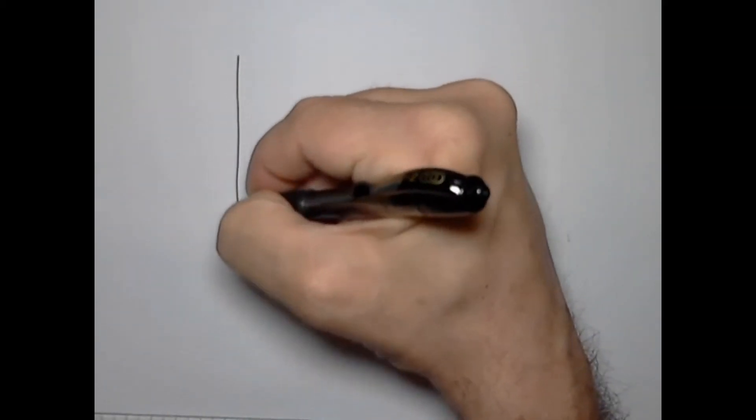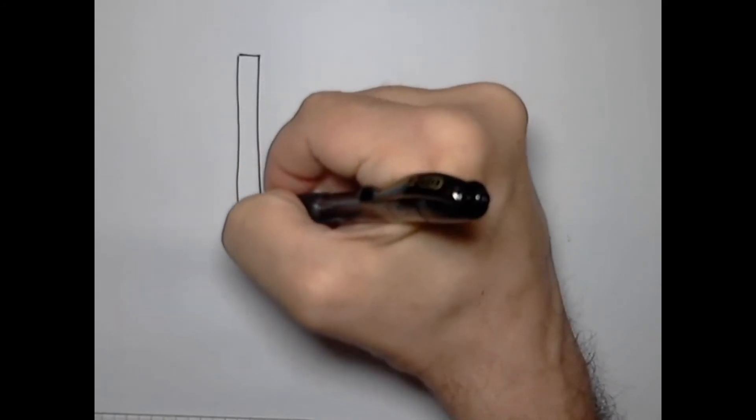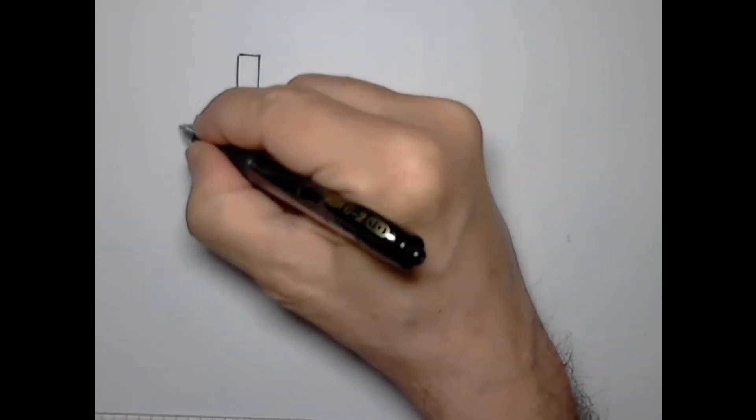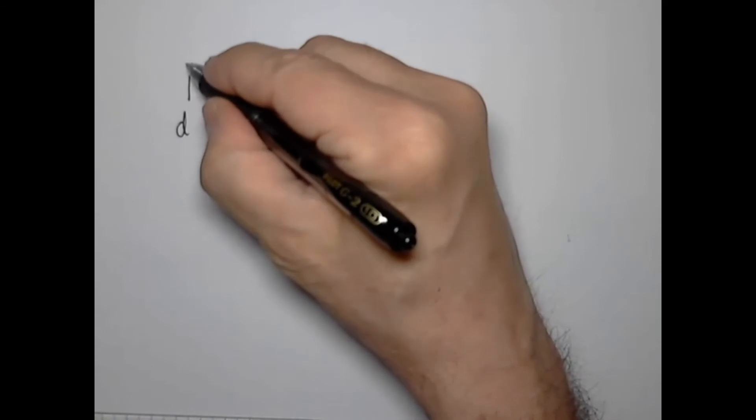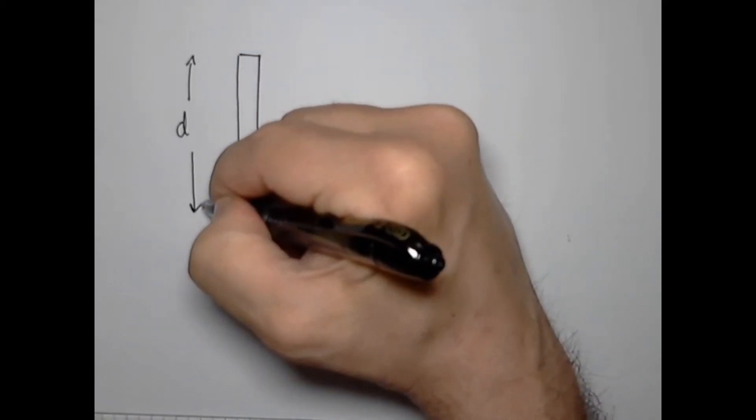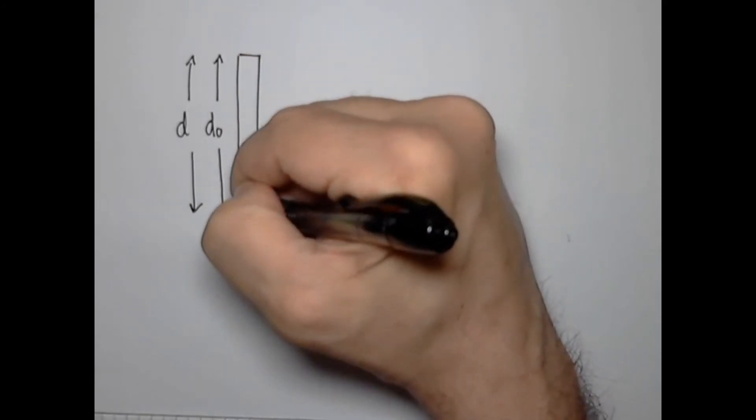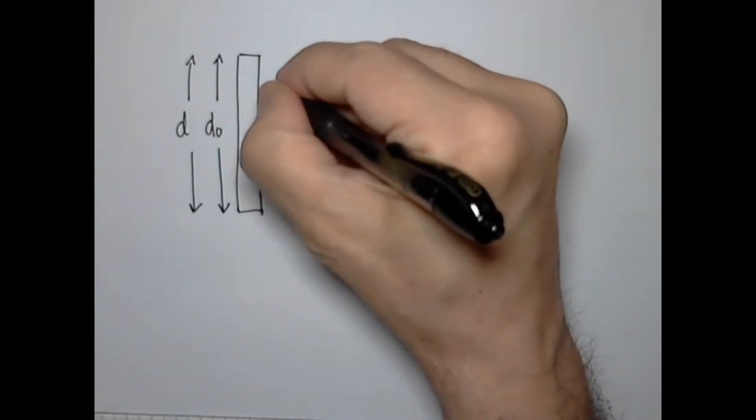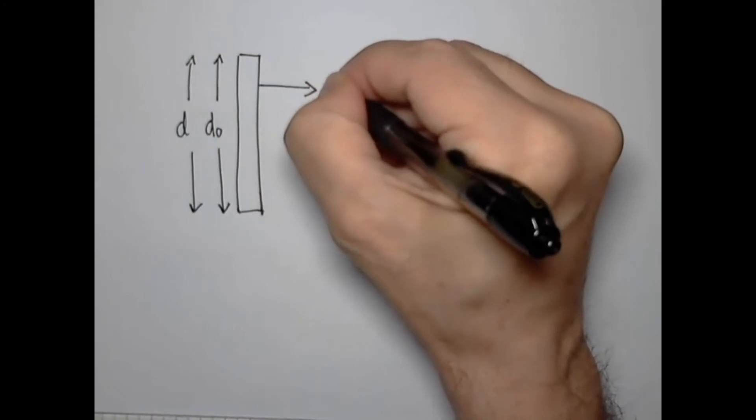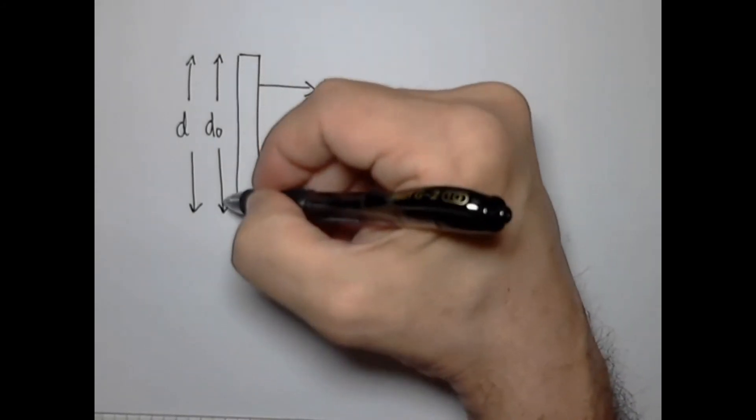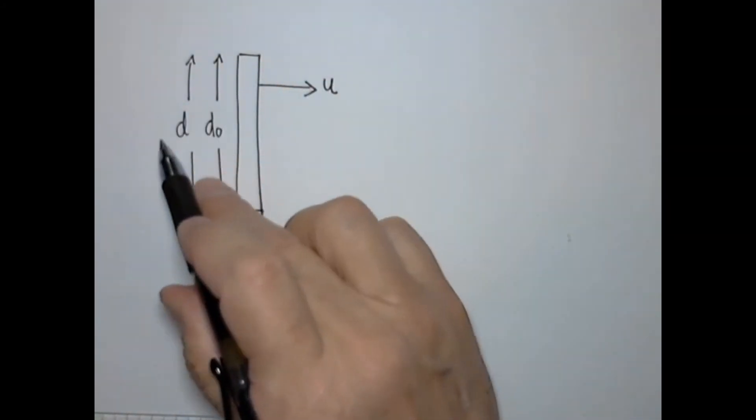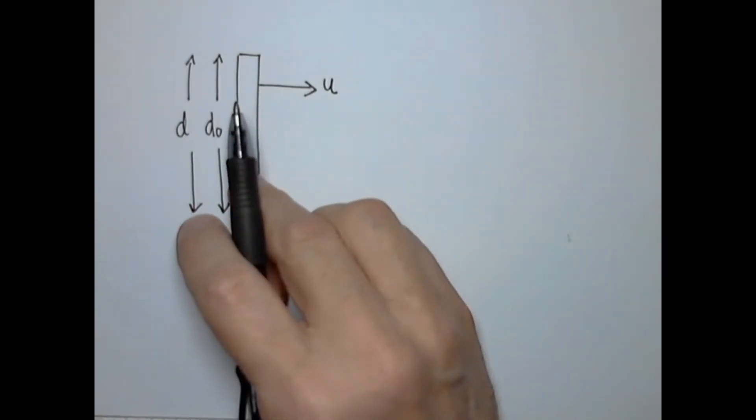Before we proceed, let's just check that the length d, which would be measured, the length of the clock measured in frame s and the length d0 measured in frame s prime in which the clock is at rest. Remember, the clock is moving to the right perpendicular to this length. Let's just check that d and d0 are the same. Now, we can do a thought experiment.